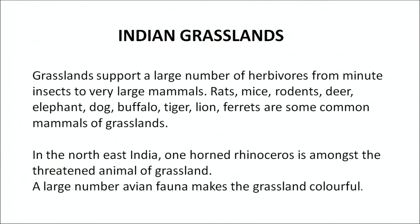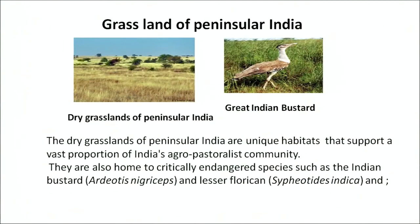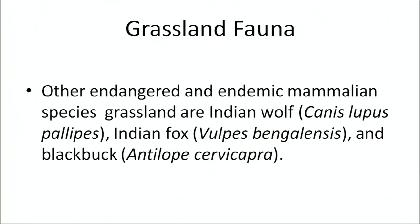In northeastern India, the one-horned rhinoceros is an almost threatened animal of the grasslands and the government is taking measures to protect it. A large number of avian fauna make the grassland colourful. The dry grasslands of peninsular India support a vast proportion of the agro-pastoralist community and are home to critically endangered species such as the Indian bustard and lesser floricans. Other endangered endemic mammalian species of the grassland are the Indian wolf, Indian fox and blackbuck.